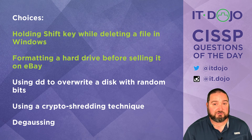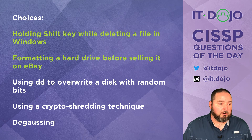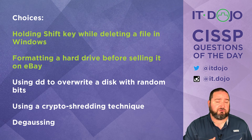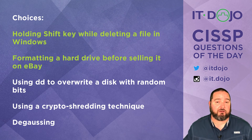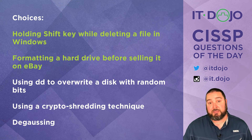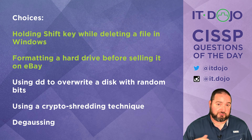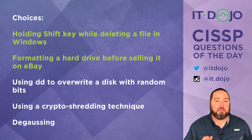Crypto shredding is also a lot faster in most cases than writing random ones and zeros to a drive. More often than not, people prefer to physically destroy a drive — melt it or put it through a giant shredder — which is also a very effective method. If you don't want to do that, encrypting the entire drive and deleting the keys works well. The last answer choice is degaussing: applying a very strong magnetic field to magnetic media, which shifts all the bits and securely erases the disk. To summarize: holding down Shift while deleting and formatting the drive before selling both leave remnants concerns. The other techniques — dd, crypto shredding, degaussing, and physical destruction — are much more viable for eliminating those concerns.